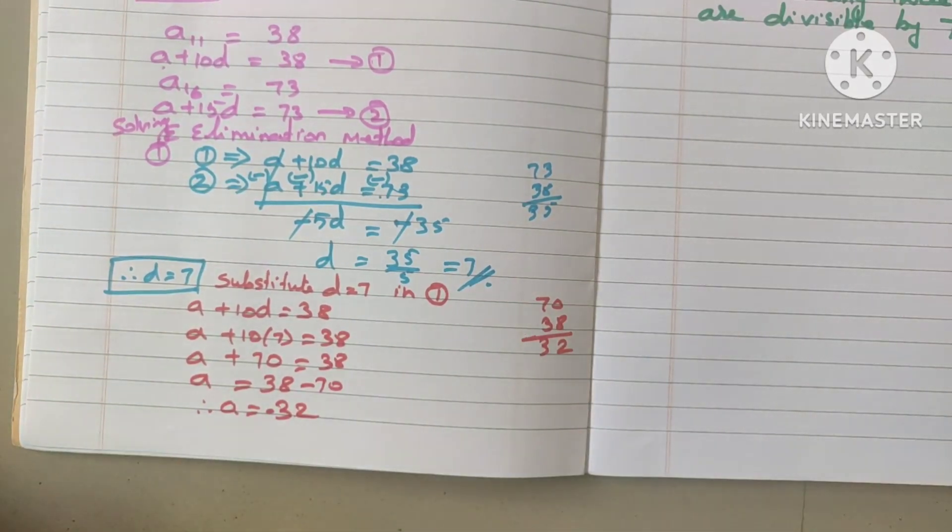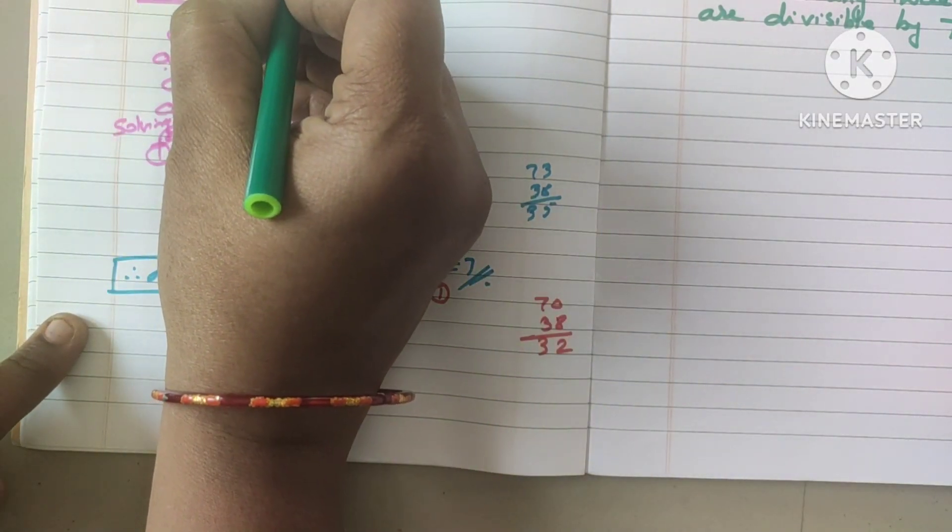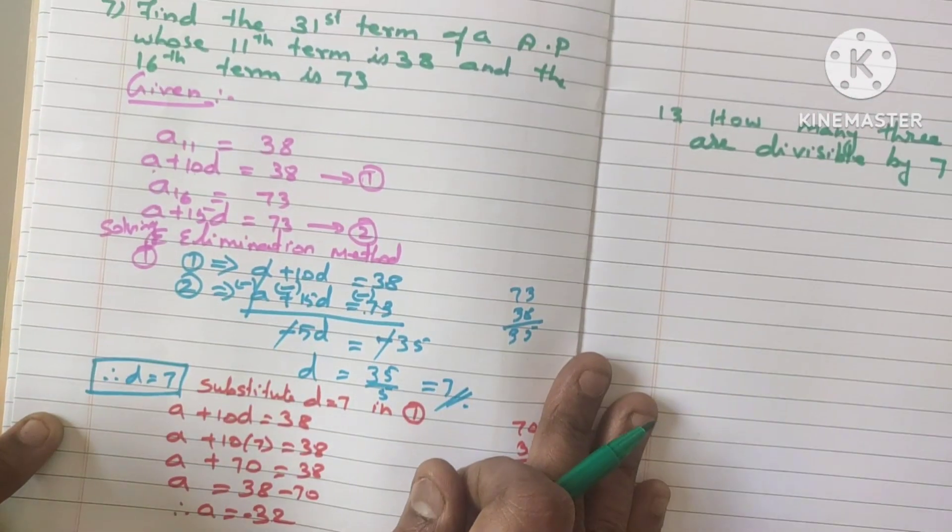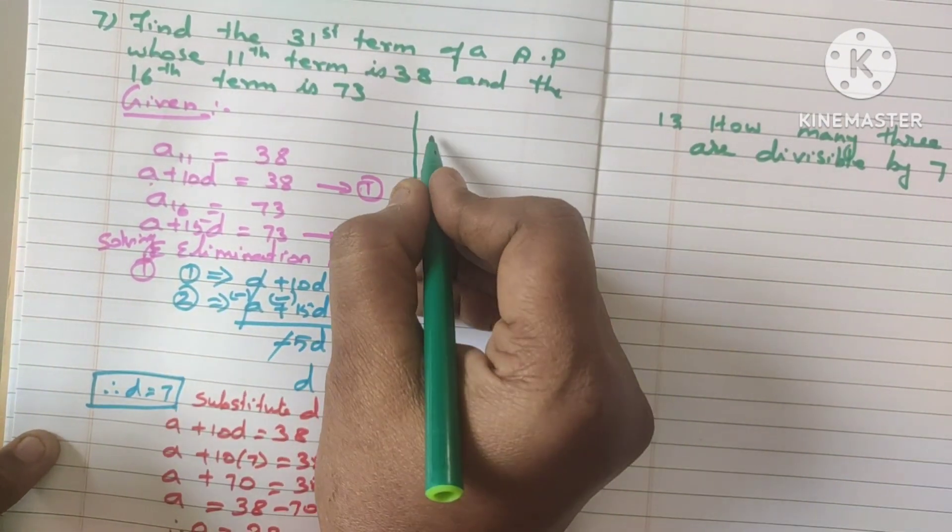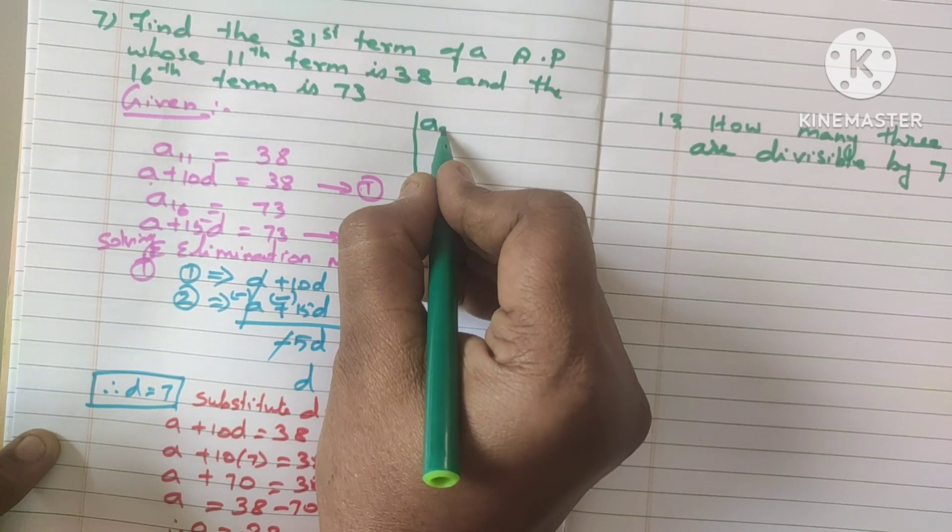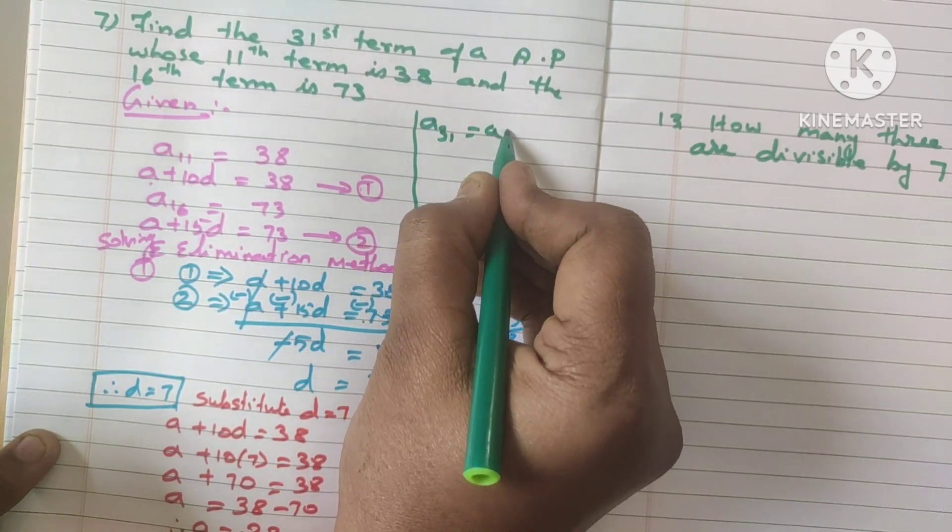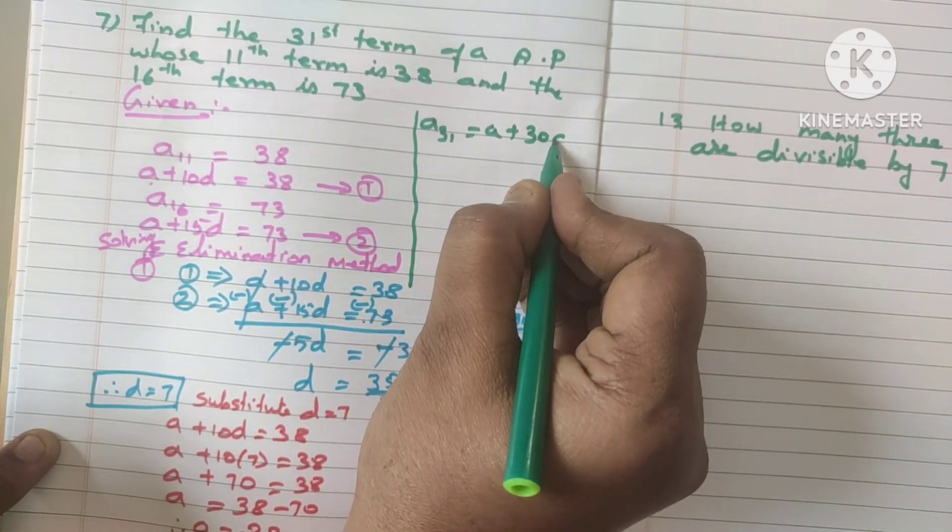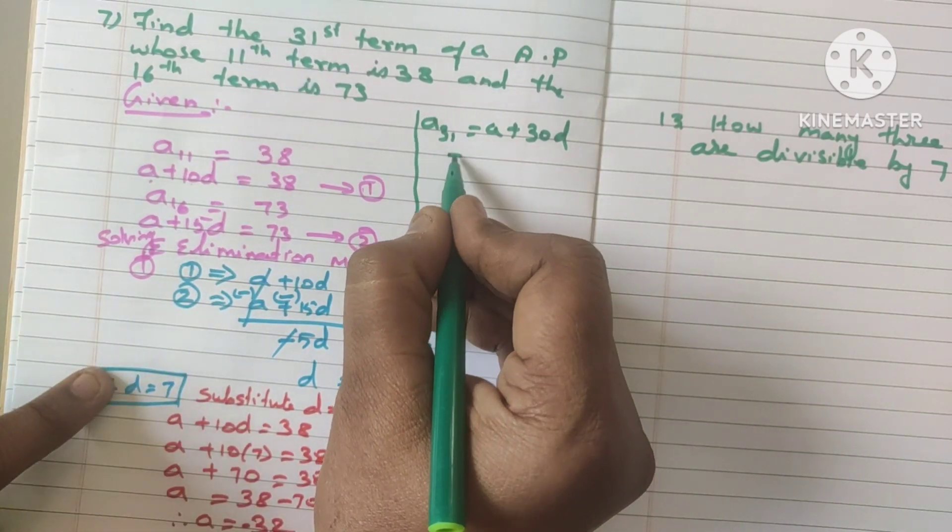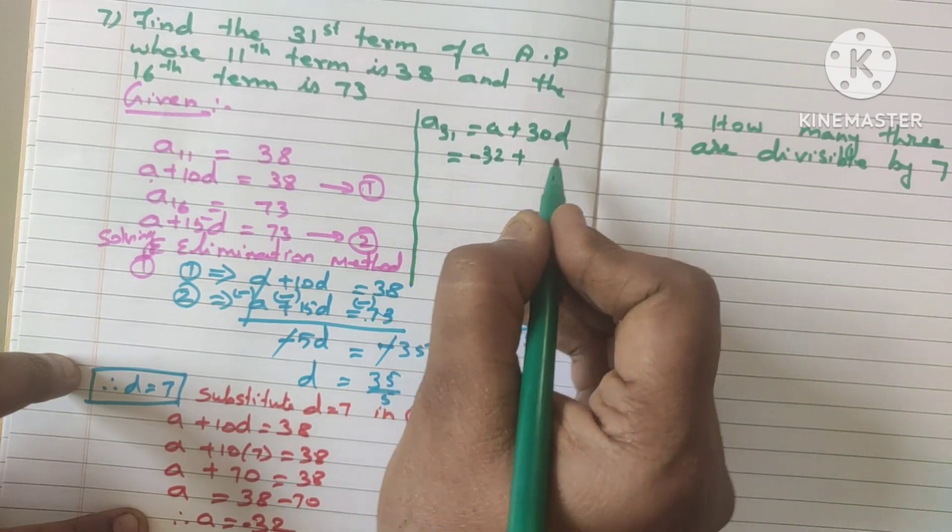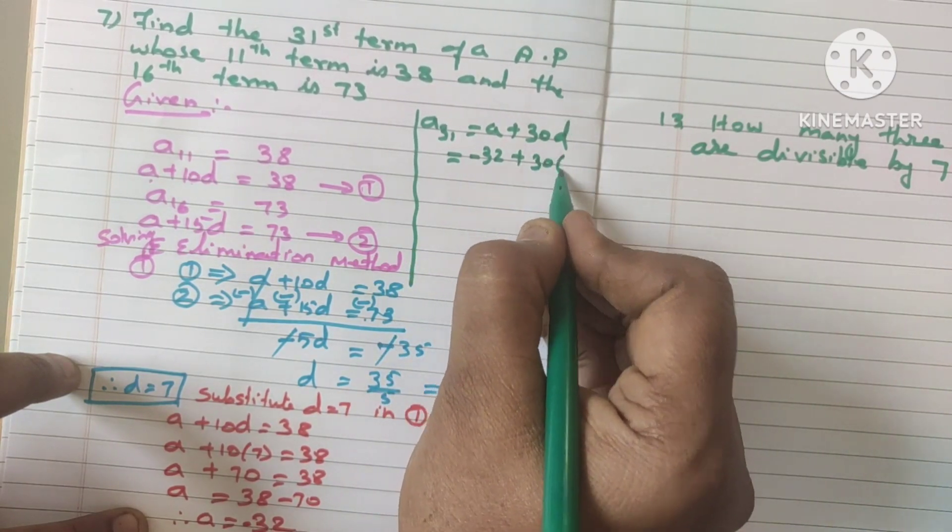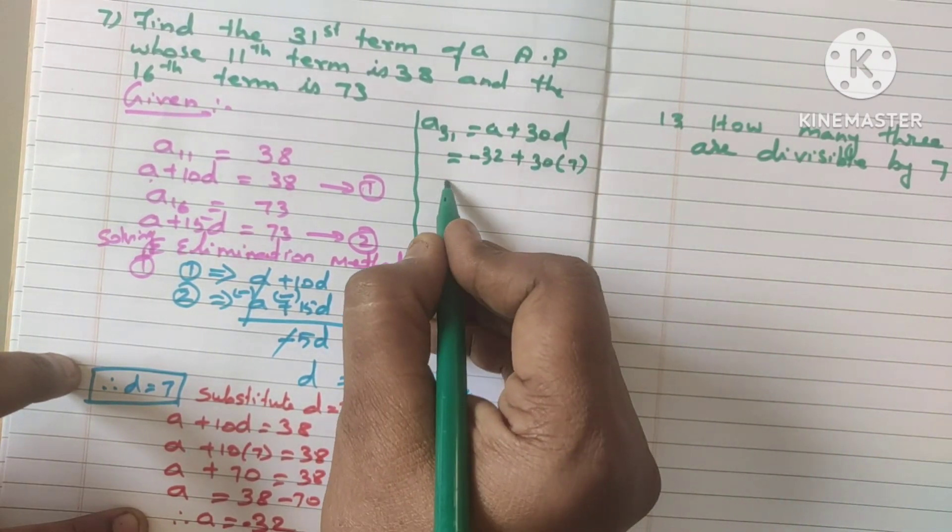Now we should find out A31. Because, sorry, A31. Because they asked you to find out the 31st term. So how to find the 31st term? What is the formula? A31 is equal to A plus 30D. So substitute the A value. What is the A value? A value is nothing but minus 32. Plus D value, 30 into 7.